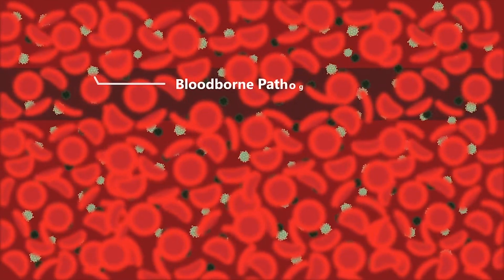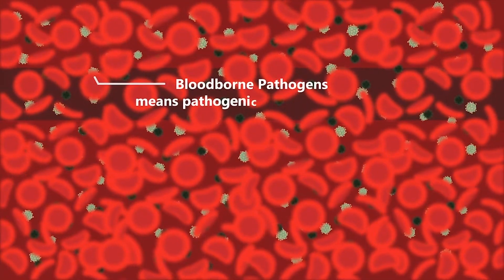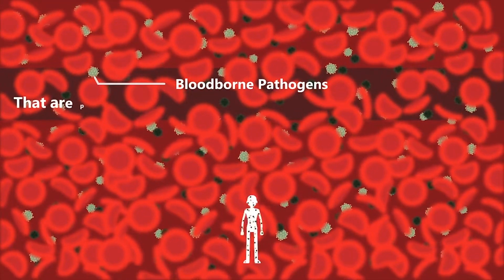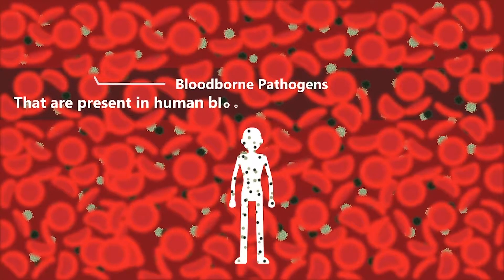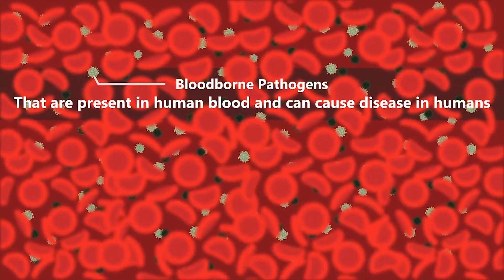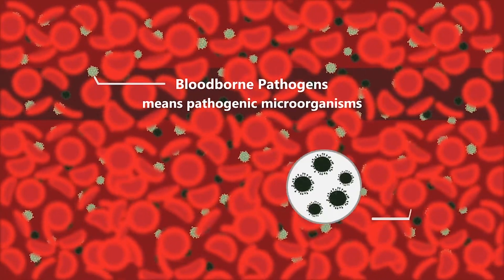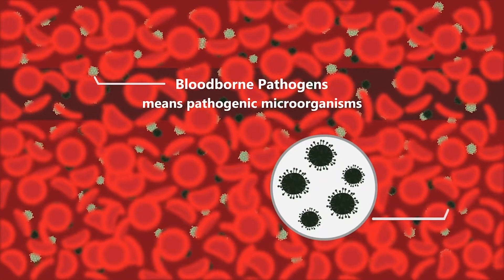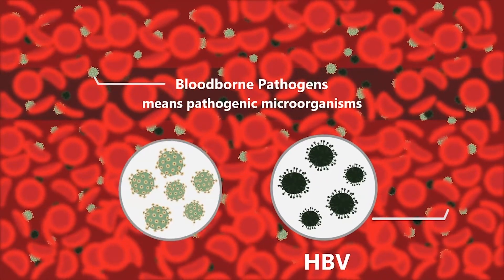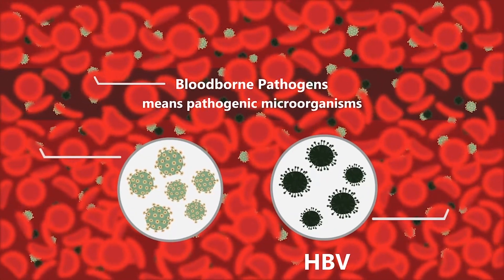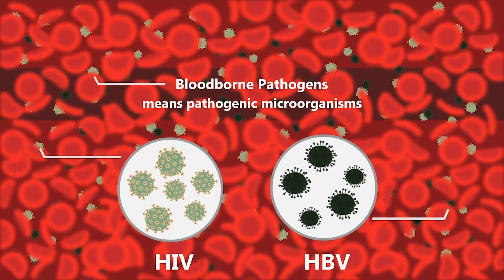Bloodborne pathogens means pathogenic microorganisms that are present in human blood and can cause disease in humans. These pathogens include, but are not limited to, hepatitis B virus (HBV) and human immunodeficiency virus (HIV).